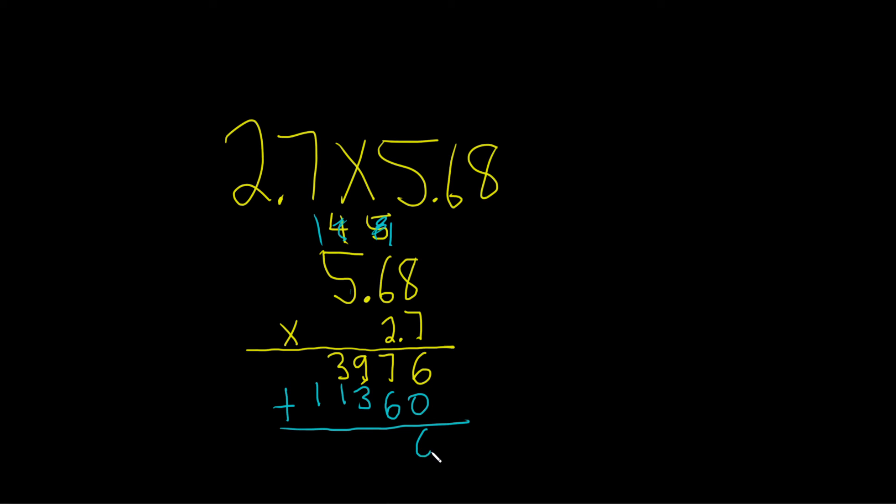6 plus 0 is 6. 7 plus 6 is 13, so you write down the 3, carry the 1. 9 plus 1 is 10, plus 3 is 13. Carry the 1. 1 plus 3 is 4, plus 1 is 5. Then we write down the 1. And here's the key point.